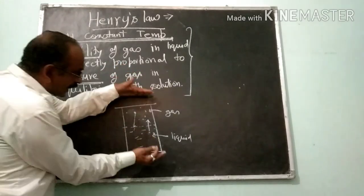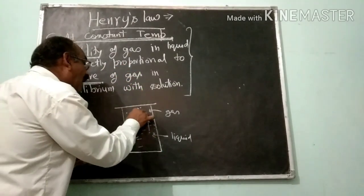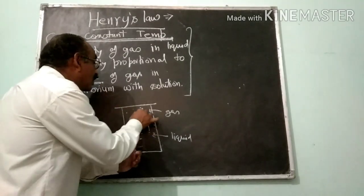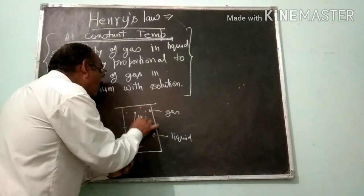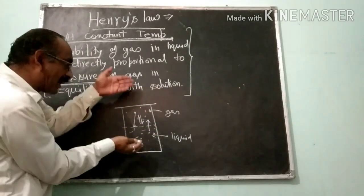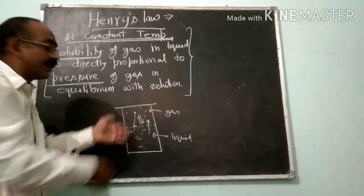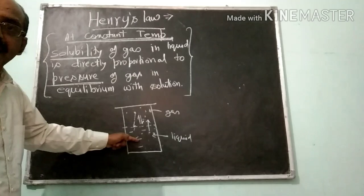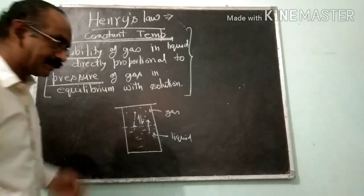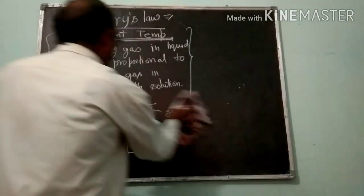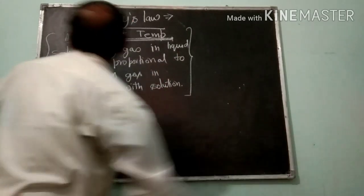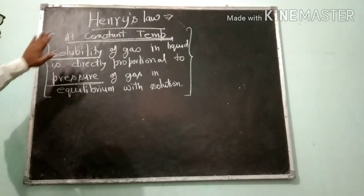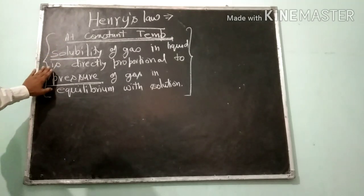If the container is closed, then the gas and dissolved gas are in equilibrium. Gas escaping and gas dissolving are equal. Gas and solution are equal. Is it clear? The statement is: at constant temperature, the solubility of gas is proportional to the pressure.